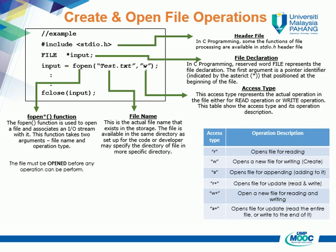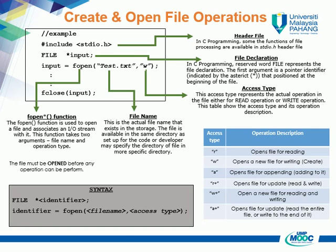This table shows the access types and their operation descriptions. There are six access types covered: r — opens a file for reading; w — opens a new file for writing; a — opens a file for appending (adding to it); r+ — opens a file for update (read and write); w+ — opens a new file for reading and writing; and a+ — opens a file for update, reading the entire file or writing to the end of it. From this explanation, the syntax for creating and opening files can be formed.